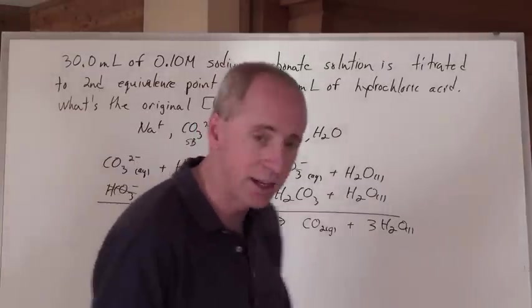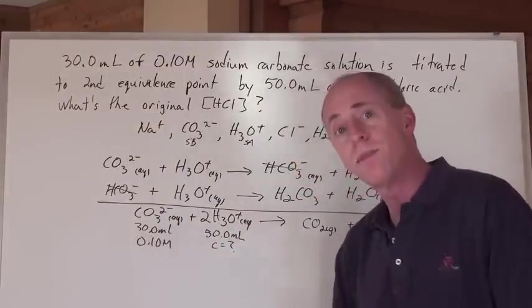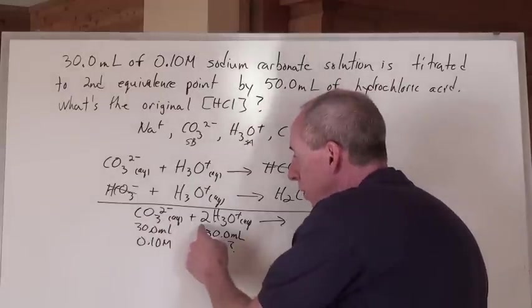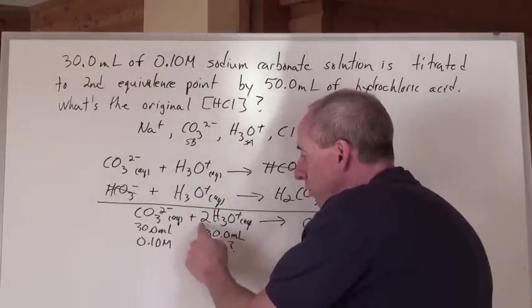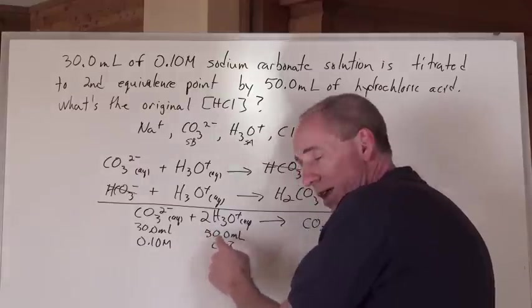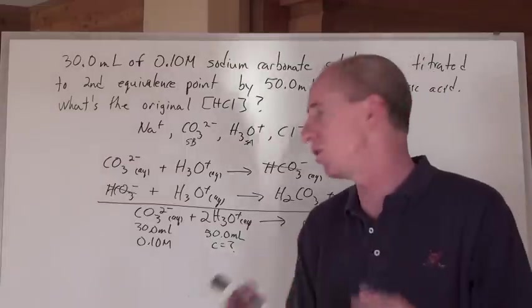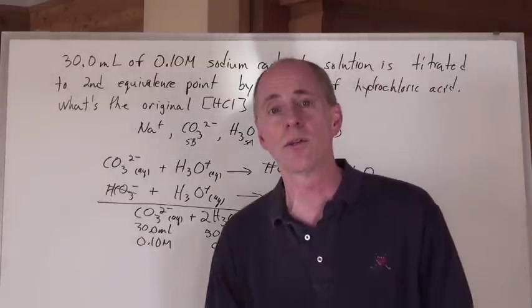See how it's going to be done? Here's the concentration, here's the volume, that will get us the moles. In a 1 to 2 ratio, we can then figure out the moles that we have here. Moles divided by liters, that milliliters can be turned into liters, finds us the concentration. And we can do that all in one line of stoichiometry.